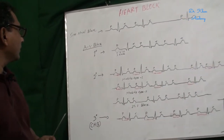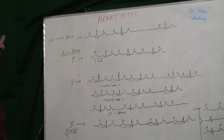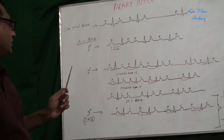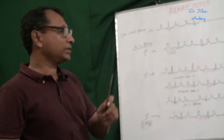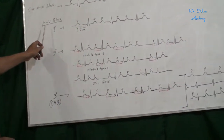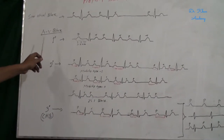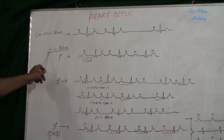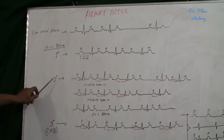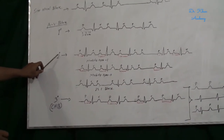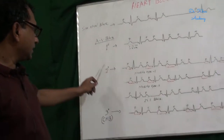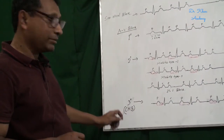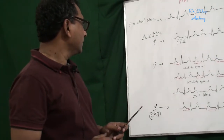AV block occurs when the impulse from the AV node to the ventricle is conducted but some SA node impulses are not conducted to the ventricle. First degree means all SA node impulses are conducted to the ventricle but delayed at the AV node. Second degree means some SA node impulses are not conducted to the ventricle. Third degree means no SA node impulse is conducted to the ventricle — this is called complete heart block.